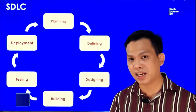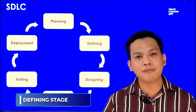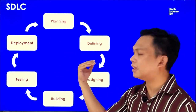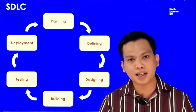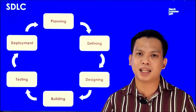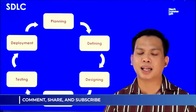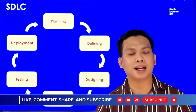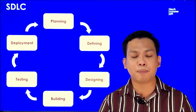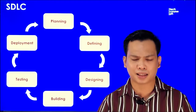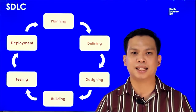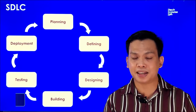Ang next stage naman natin is defining the requirements. After na maanalyze natin yung mga requirements natin sa planning stage, ang pupuntahan naman natin is yung defining the requirements. Nililist down natin yung mga kakailanganin natin at idino-document natin ito kung ano yung mga needed na requirements sa ating pagbuo ng software sa pamamagitan ng SRS or Software Requirement Specification. Ito ay a-approbahan ng ating kliyente at kapag ito'y approve na, ito yung susundin para mabuo yung ating software ng mga developers natin.